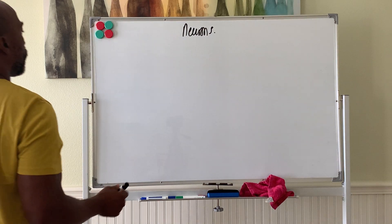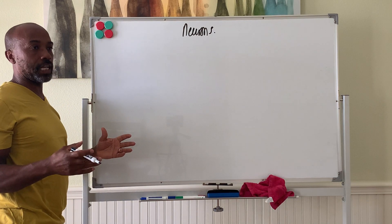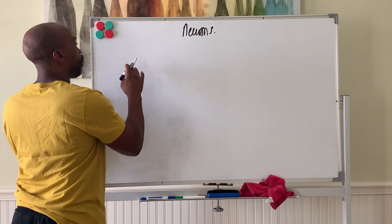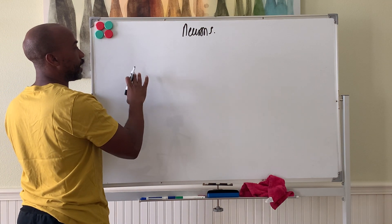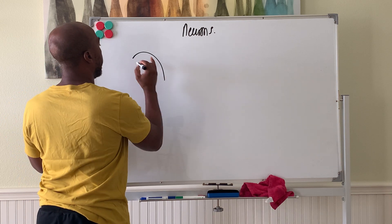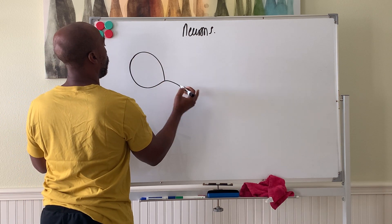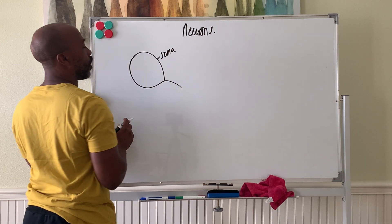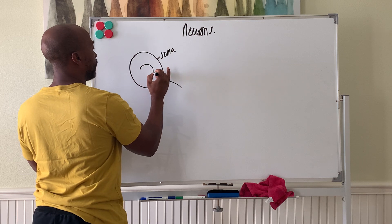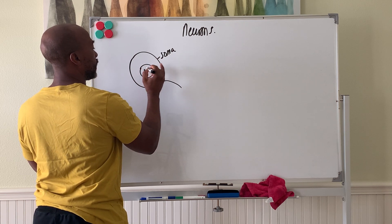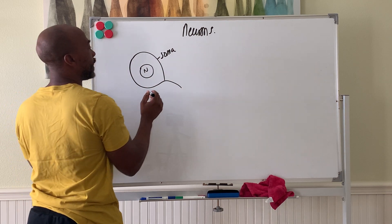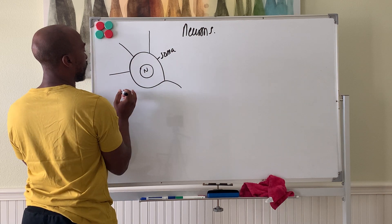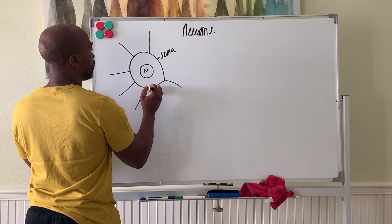Let's look at neurons. Neurons are the other class of cells, other than glial cells, in the nervous system. I'm going to draw a typical neuron and discuss its parts. The neuron has what we call a soma, or pericardium, or cell body. The soma is where you have the cell nucleus, and attached to the soma you may have these antenna-like things called dendrites.